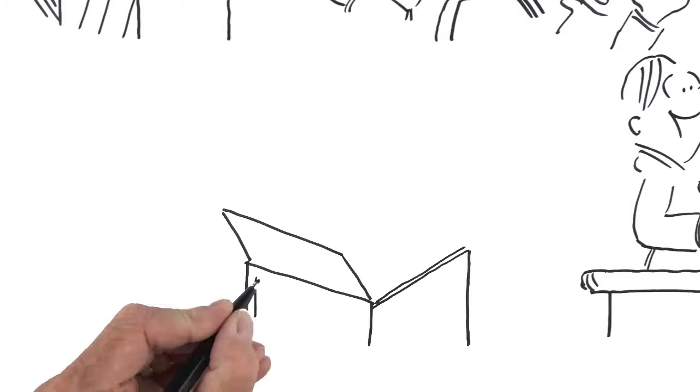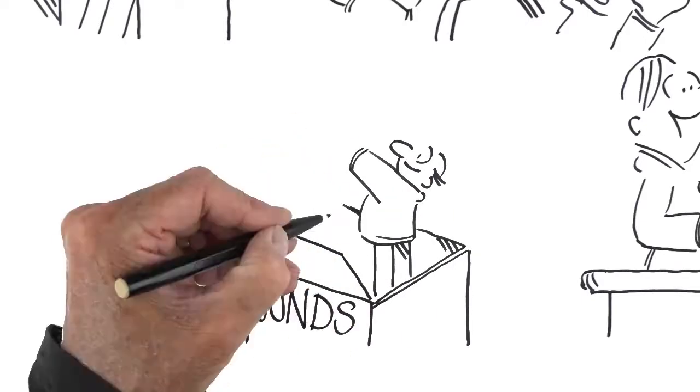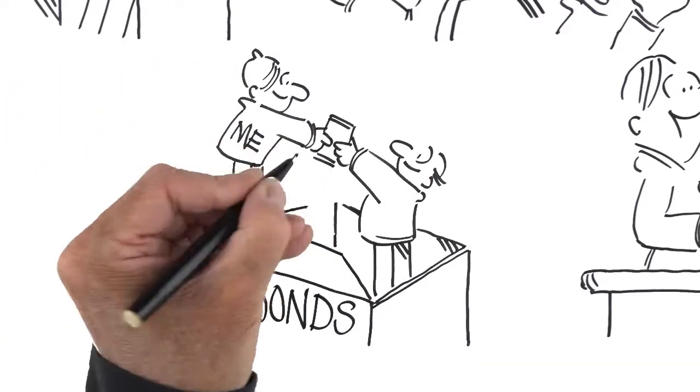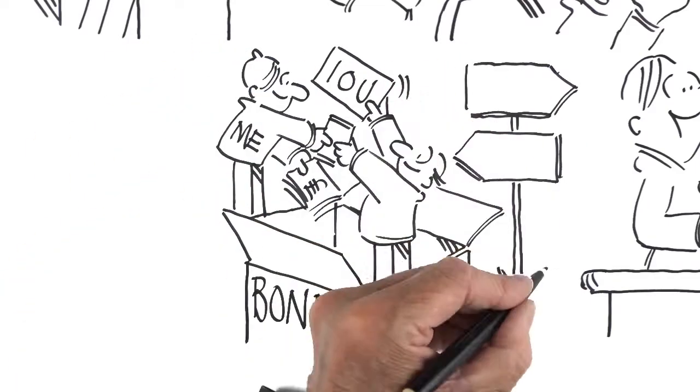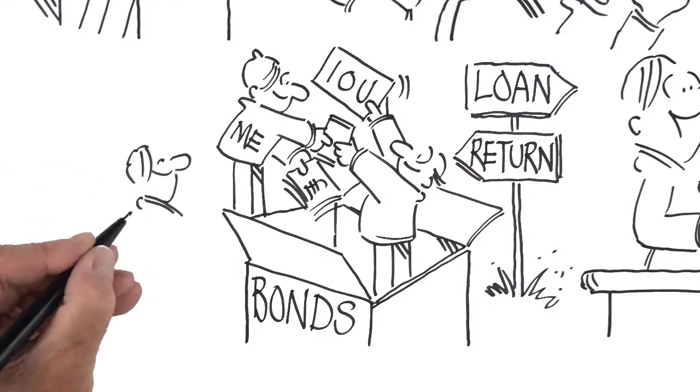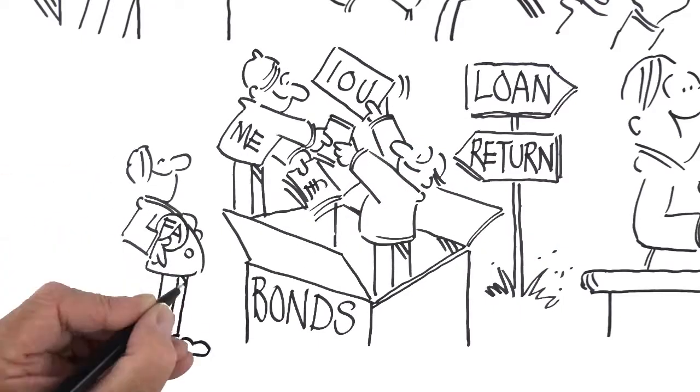Secondly, fixed interest bonds. A bond is a kind of loan to the government or a company, which pays you a fixed rate of interest over a set period of time. At the end of the term, you get your original stake back plus the interest you've earned.